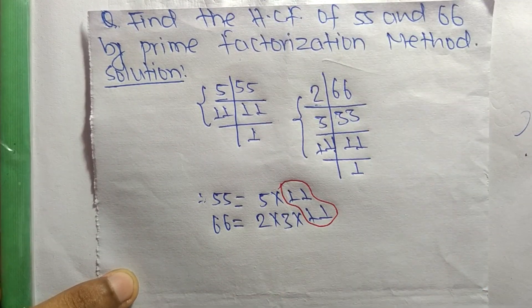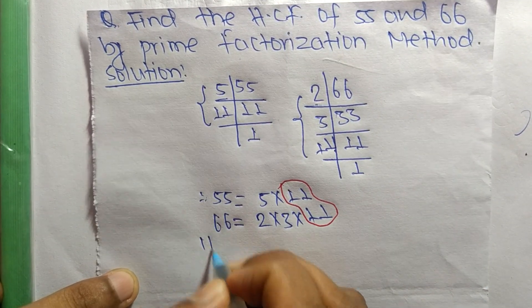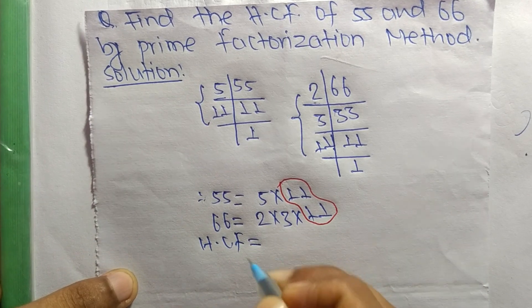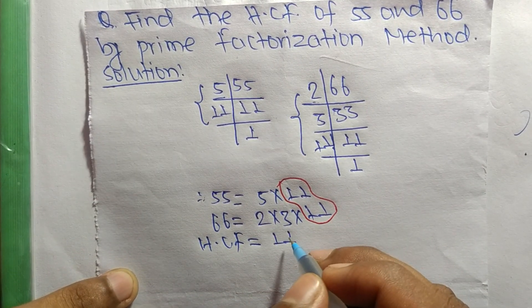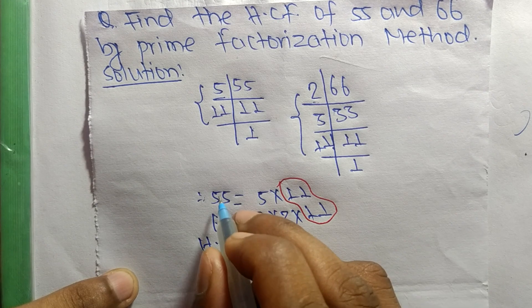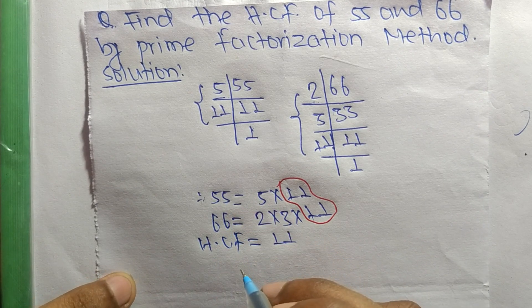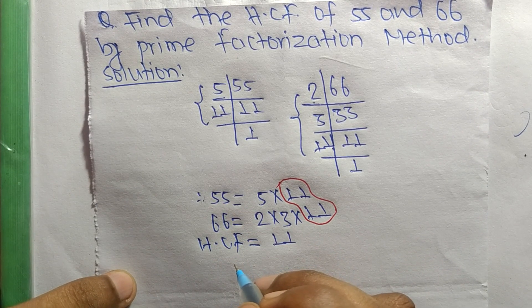So the HCF is equal to 11. Therefore, 11 is the HCF of 55 and 66. So this much for today and thanks for watching.